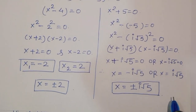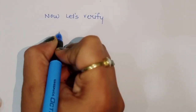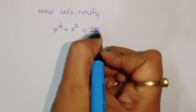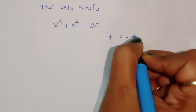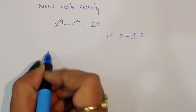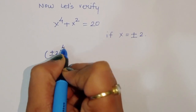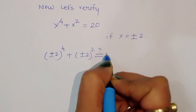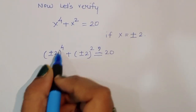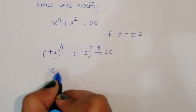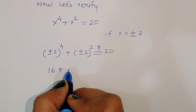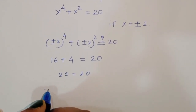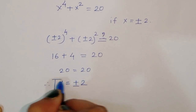Now let's verify these values. The question is x power 4 plus x square is equal to 20. If we take x is equal to plus or minus 2, then plus or minus 2 power 4 plus plus or minus 2 square equals 2 power 4 plus 2 power 2, that is 16 plus 4, which is equal to 20. So 20 is equal to 20. Therefore x is equal to plus or minus 2 is confirmed as one solution.